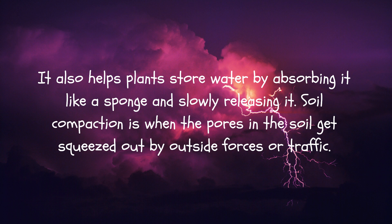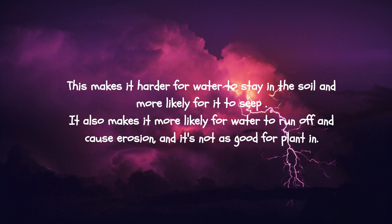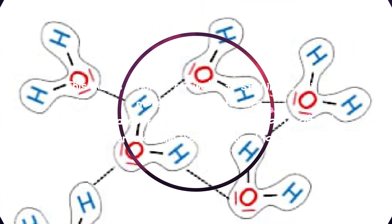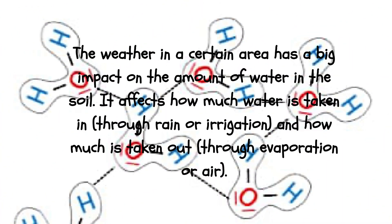Soil compaction is when the pores in the soil get squeezed out by outside forces or traffic. This makes it harder for water to stay in the soil and more likely for it to seep out. It also makes it more likely for water to run off and cause erosion, and it's not as good for plants to grow in.